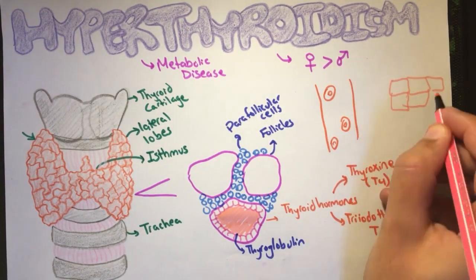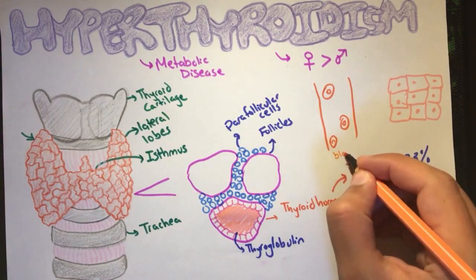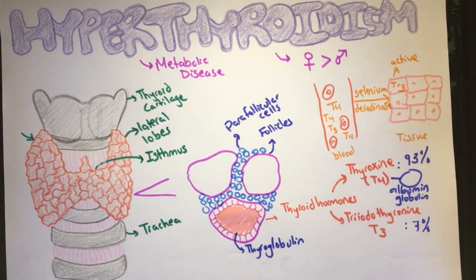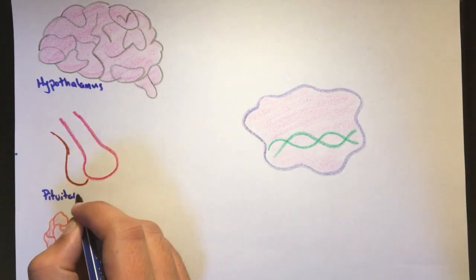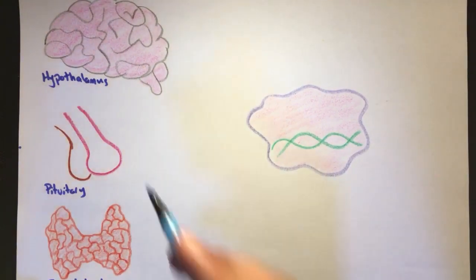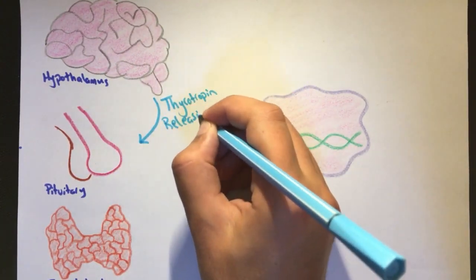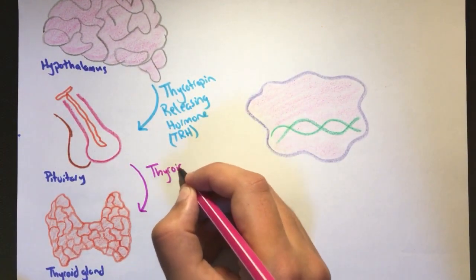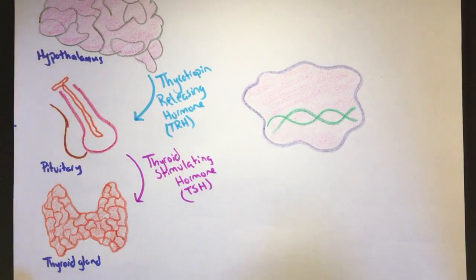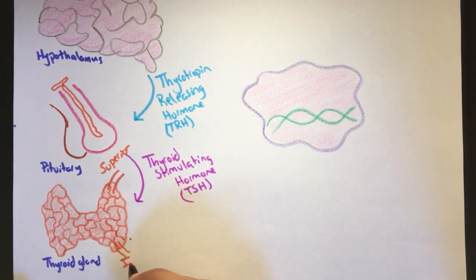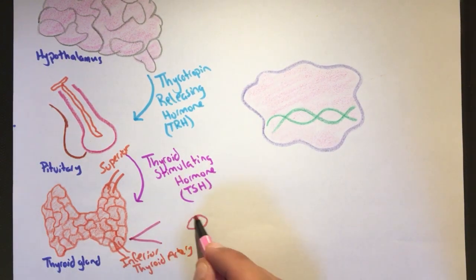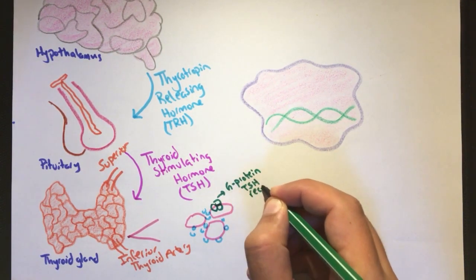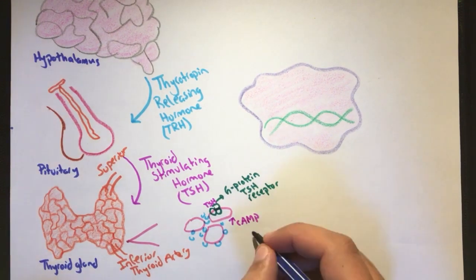However, once these hormones reach the tissues, all T4 is converted to T3, which is the active type, by selenium-containing deiodinase. Now, how are these hormones released by the thyroid gland? The hypothalamus in the brain releases hormones called thyrotropin releasing hormone. These hormones travel by means of the hypophyseal portal system into the anterior pituitary, where they cause the release of thyroid stimulating hormone. TSH travels in the blood and reaches the thyroid gland via the superior and inferior thyroid arteries. TSH binds to a G-protein coupled receptor, which in turn increases cyclic AMP levels, increasing thyroid hormone synthesis.